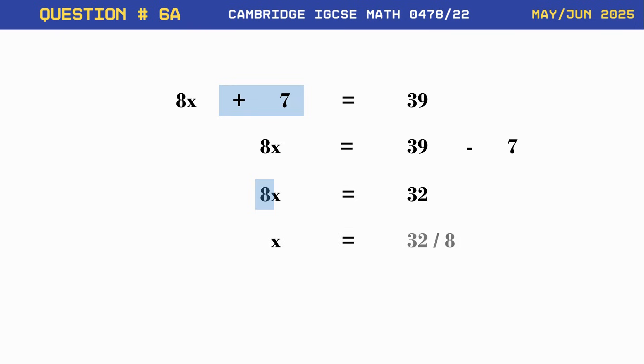So, our equation will become x equals 32 divided by 8, which ultimately results in x equals 4, which is the answer.